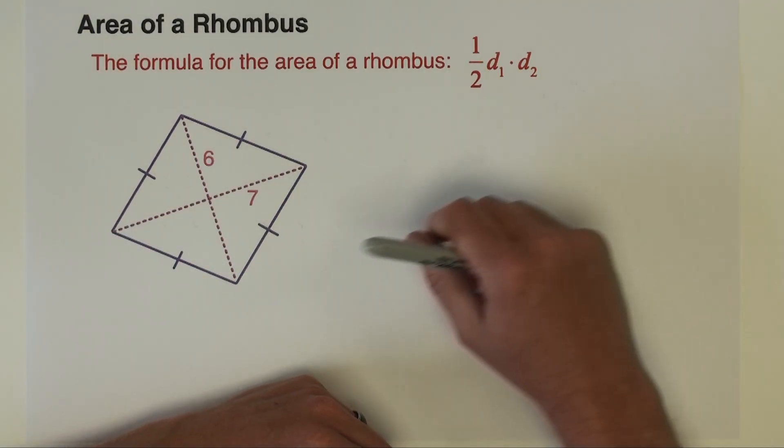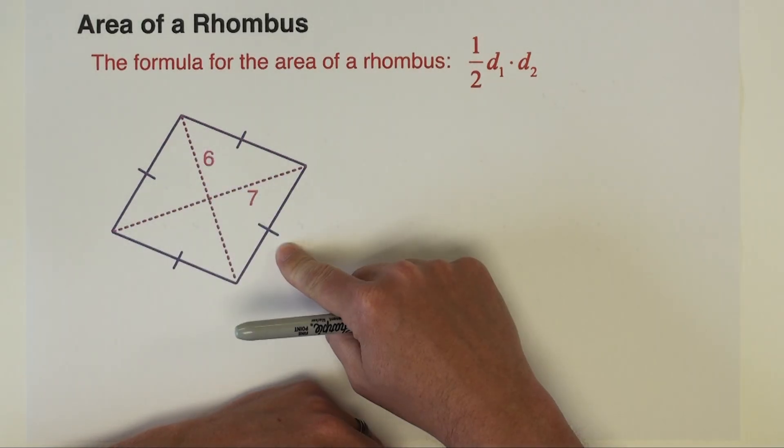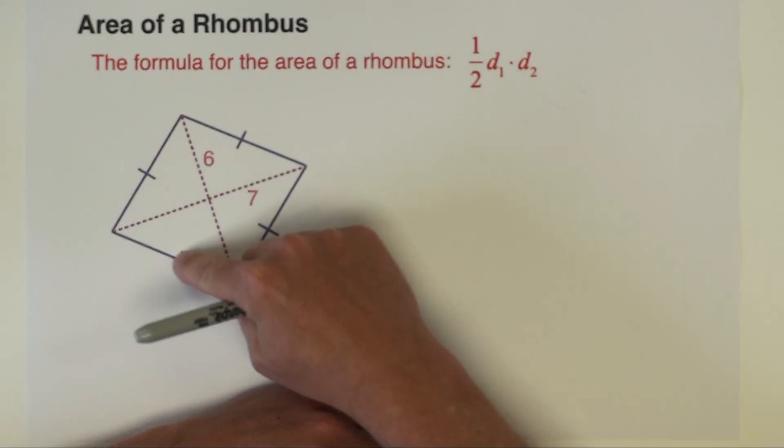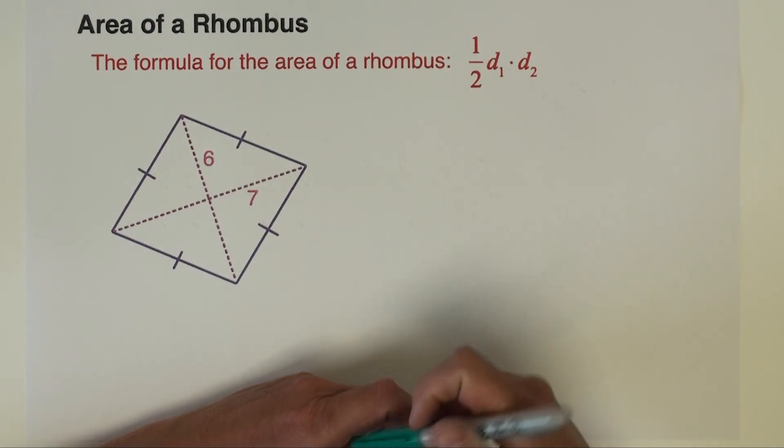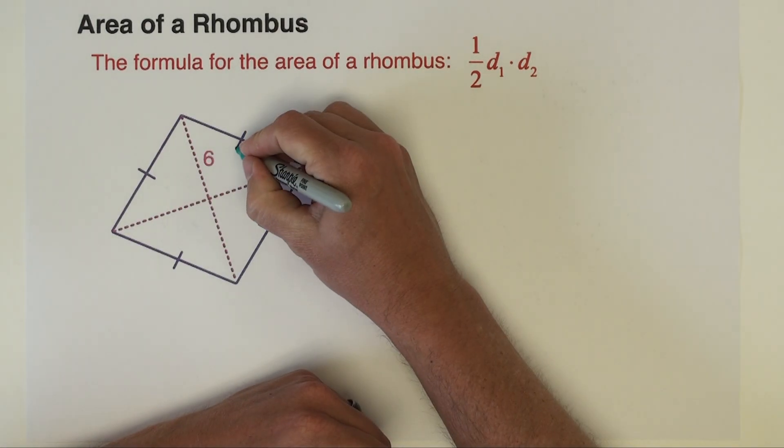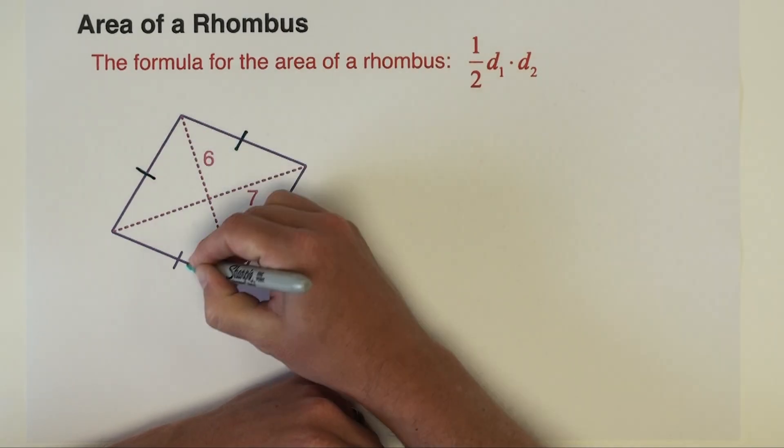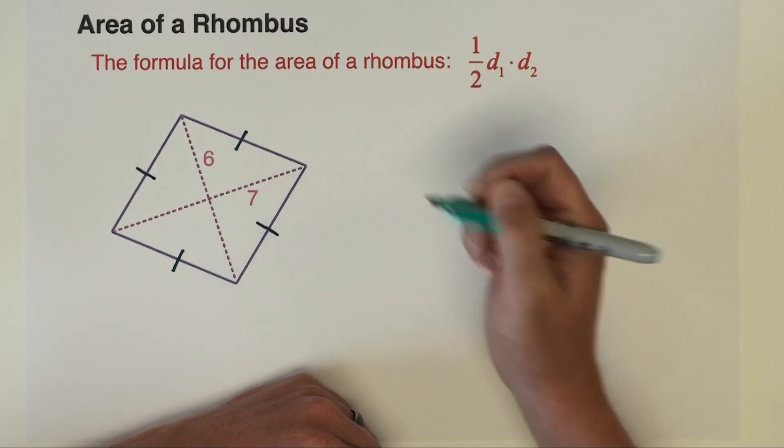Now a rhombus, just to review, is a quadrilateral. So a figure with four sides where all four sides are congruent. So they have to be marked congruent or you have to be told that you have a rhombus. In this case, all the sides are marked congruent.